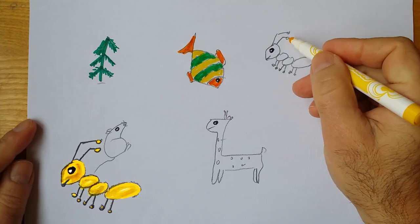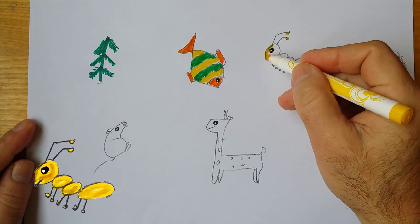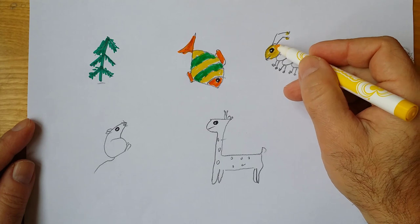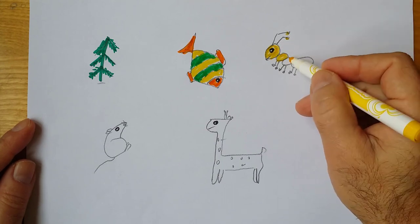Now let's draw an ant. I paint the ant in yellow, and you can paint an ant in the color you saw in nature when you met a small ant.